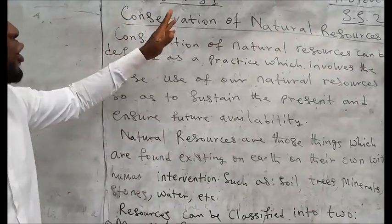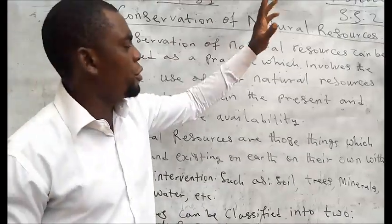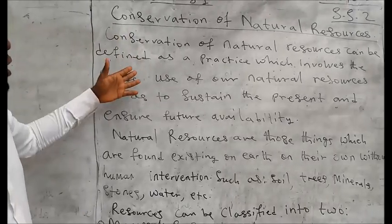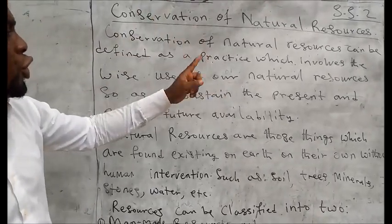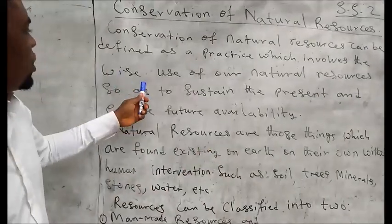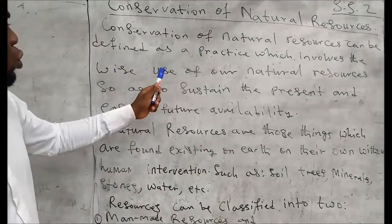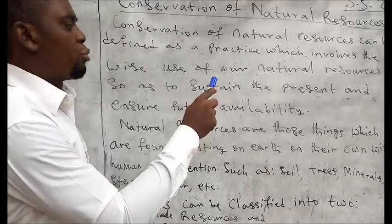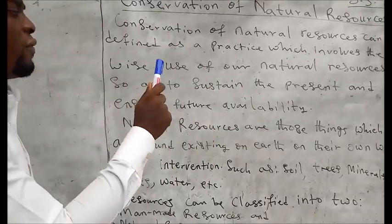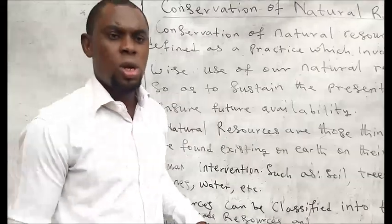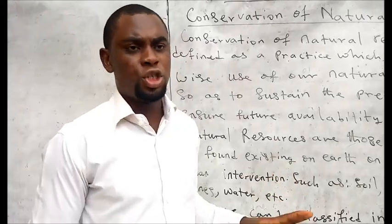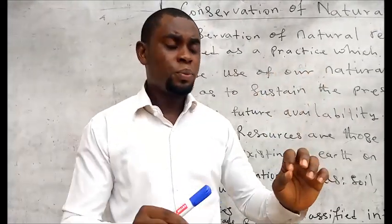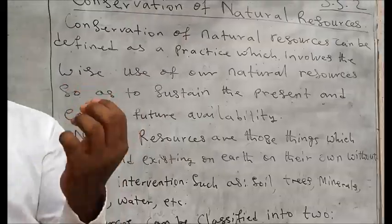Therefore, conservation of natural resources can be defined as a practice which involves the wise use of our natural resources so as to sustain the present and ensure future availability. I want to explain this concept — we said conservation is a practice.